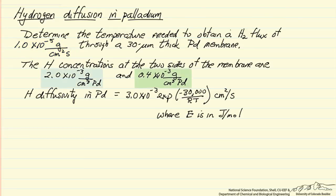We are given the hydrogen concentrations inside the membrane at the two sides. In other words, this is hydrogen atoms that are dissolved within the palladium at each side of the membrane. We are given the diffusivity which is a function of temperature and we want to solve for the temperature, so let's look at a diagram of this process first.